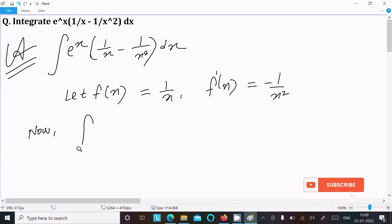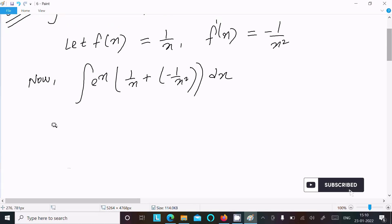Now writing the integral: e to the power x times 1 by x plus minus 1 by x squared in another bracket dx.